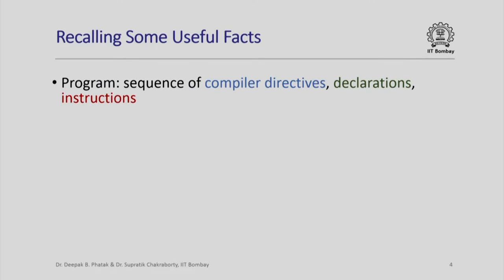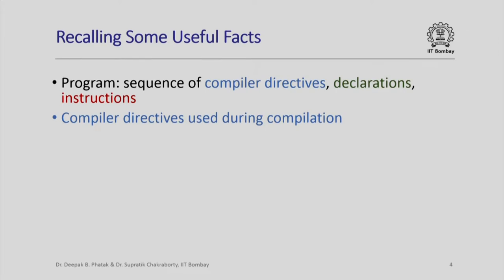Before we get going, let us recall some useful facts we have already learnt. A program is basically a sequence of compiler directives, declarations, and instructions. The compiler directives are instructions to the compiler that it uses when it tries to compile your C++ program to the machine's language — to the computer's internal language.